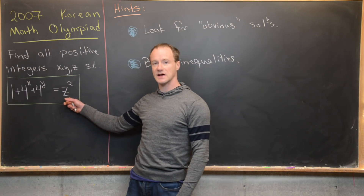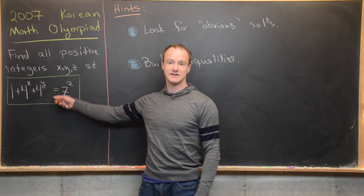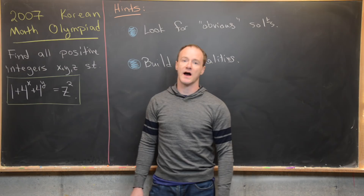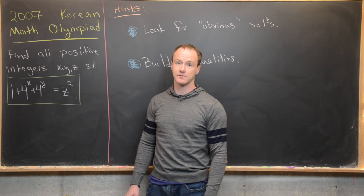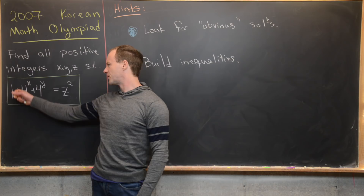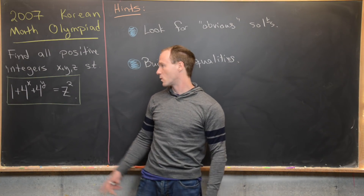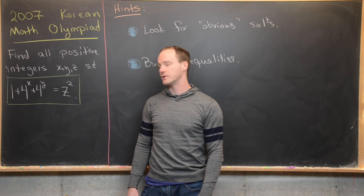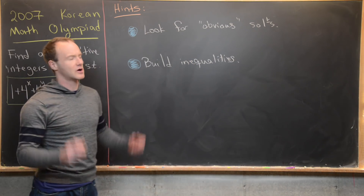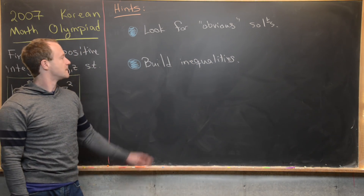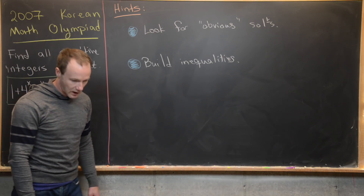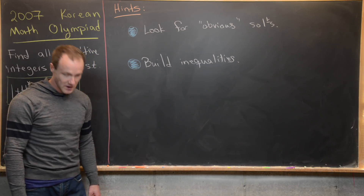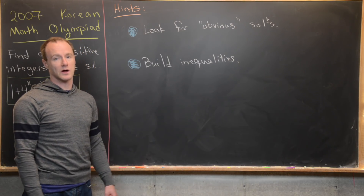The right hand side of this equation is a perfect square — it's z squared. And 1 and 4 to the y are both perfect squares. So if the middle term is just the right form, the left hand side can be written as a perfect square binomial. Those would be the obvious solutions. Then you want to build some inequalities to show those obvious solutions are the only solutions. Maybe give this problem a go, and we'll come back with the solution.